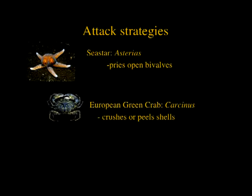Mussels are prey to a number of different predators. The sea star tends to pull the mussels open, then inserts its own stomach — turning it inside out and digesting the mussel inside its own shell. It's a gruesome death but an effective attack strategy. The green crab, the European green crab, tends to crush the shell or pry them open like a can opener. These represent different attack strategies, so the mussel has to be defended against each differently.